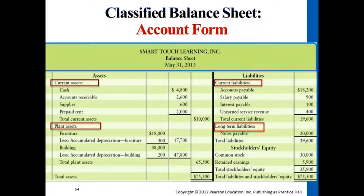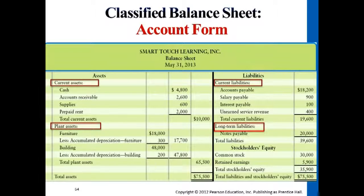All together, current assets are worth ten thousand dollars, and long-term assets are worth sixty-five thousand five hundred. Current assets are the ones that can be converted into cash or used up very soon within a year. On the liability side, current liabilities total twenty thousand six hundred — all these payables will be paid off within twelve months. Long-term notes payable of twenty thousand dollars will still be present at the beginning of next year and will not be paid off within this year.